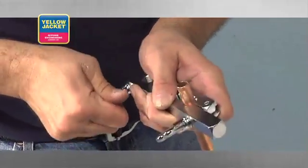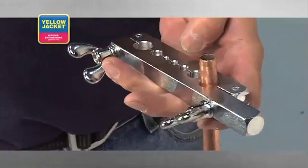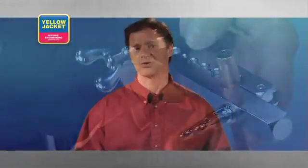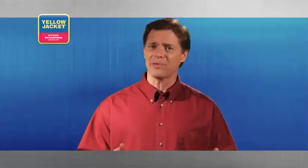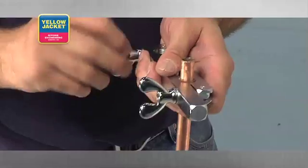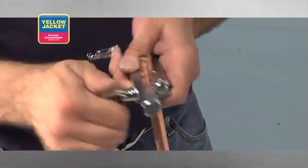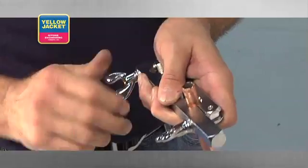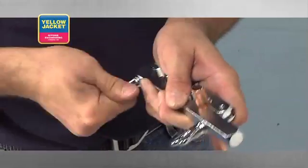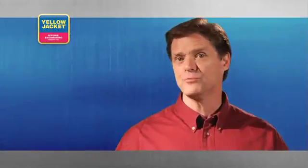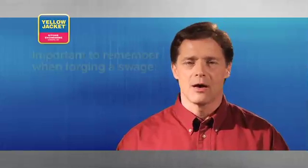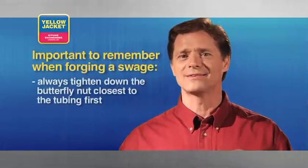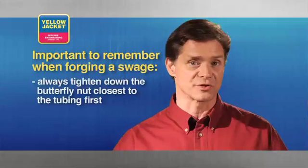Tightening the butterfly nuts for a swage is a little more critical due to the amount of force required to forge a swage. So after tightening down the second nut, it might be helpful to back it off a bit, and go back to the first nut and tighten it a bit more. Return back to the second nut again, and tighten it down. If the tube slides during the swaging process, repeat this back and forth tightening to improve the grip on the tubing. But remember, always tighten down the butterfly nut closest to the tubing first.